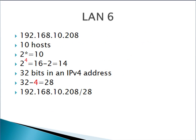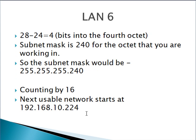LAN 6 starts at .208, we need 10 hosts again, so 2 to the 4th, 16 minus 2 is 14. 32 bits minus 4 is 28, so our network address will be 192.168.10.208/28. 28 minus 24 is 4, giving us a subnet mask of 240 again. Counting by 16 takes us up to .224 for the next network.